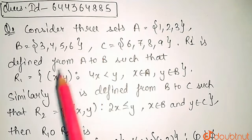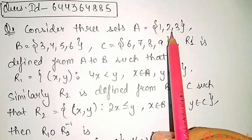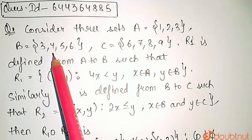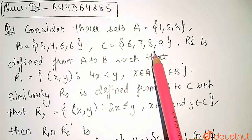In this question, there are three sets given. A is equal to {1, 2, 3}. B have elements {3, 4, 5, 6}. And C having elements {6, 7, 8, 9}.